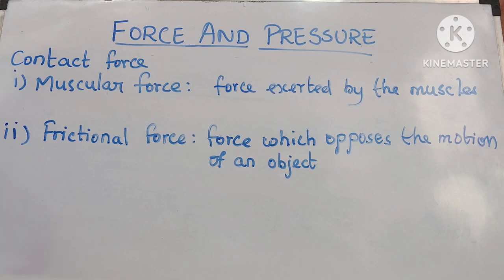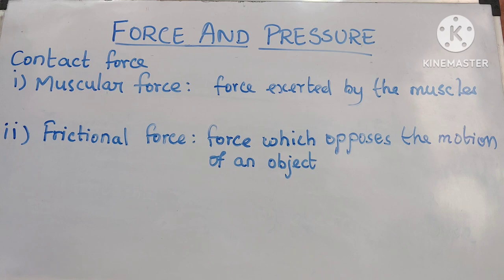Second, frictional force: a force which opposes the motion of an object. For example, a ball rolling on the ground gradually slows down and comes to rest due to the force of friction. Similarly, a bicycle slows down and stops when you stop pedaling, due to friction.